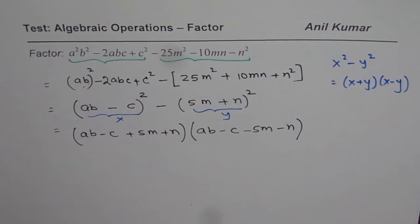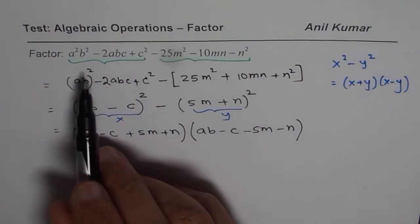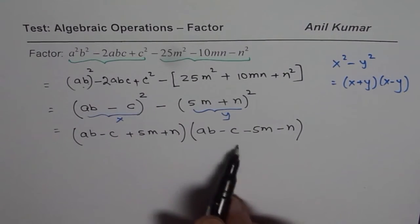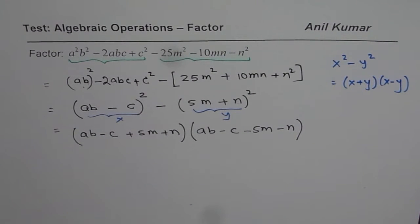So that is the factored form of the given expression. There are 6 terms in the given expression. So that is how you could actually factor the given expression. I hope that helps. Thank you and all the best.